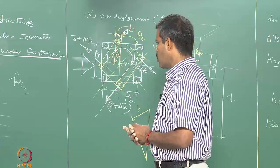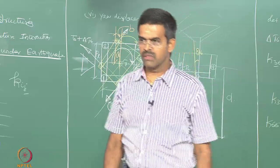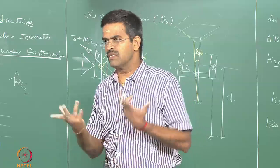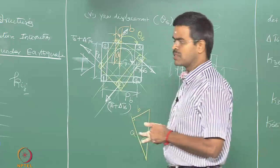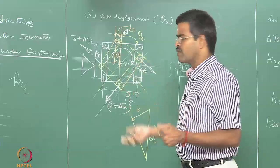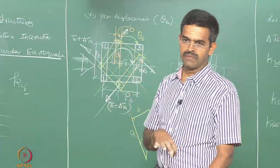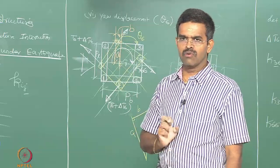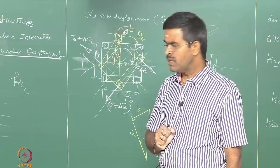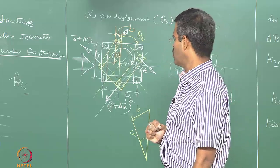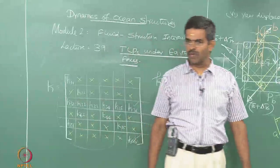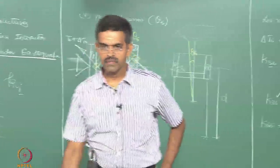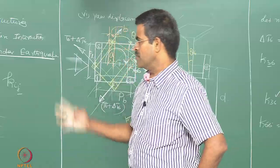K is not known because all of its terms are response-dependent. If you do not know the response, you do not know K. K31, for instance, contains cosine and sine terms which are non-linear. So the stiffness matrix has non-linear terms and, being response-dependent, it keeps changing as the wave approaches and passes the system.